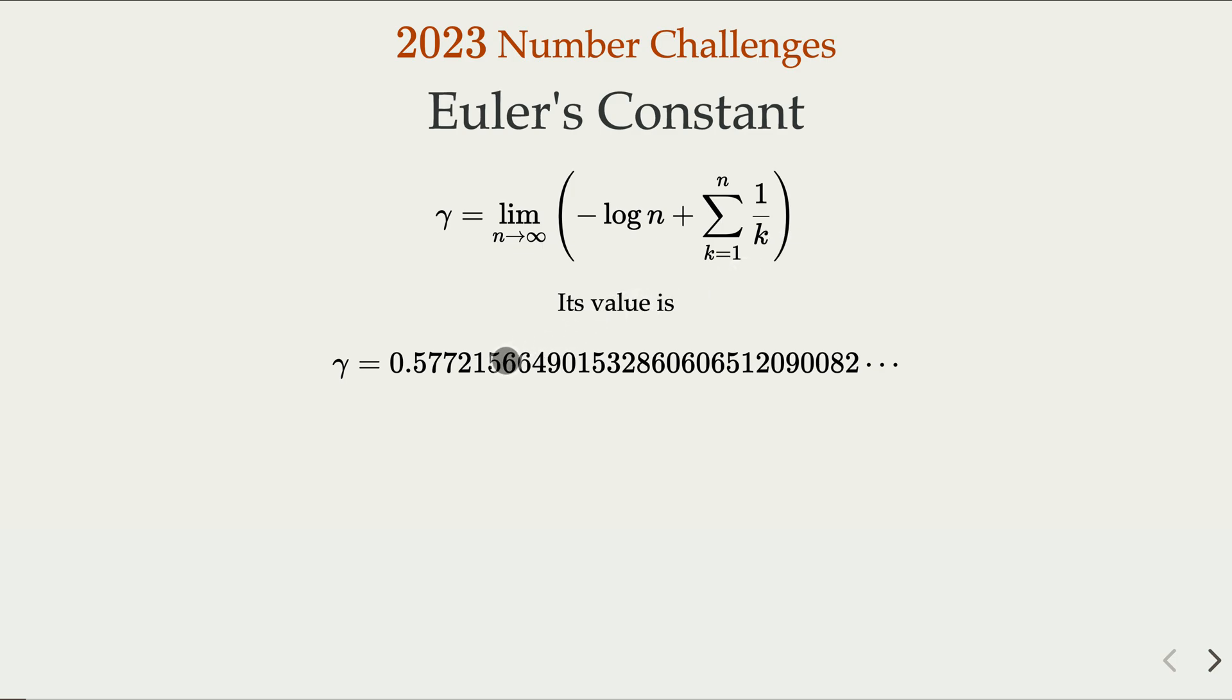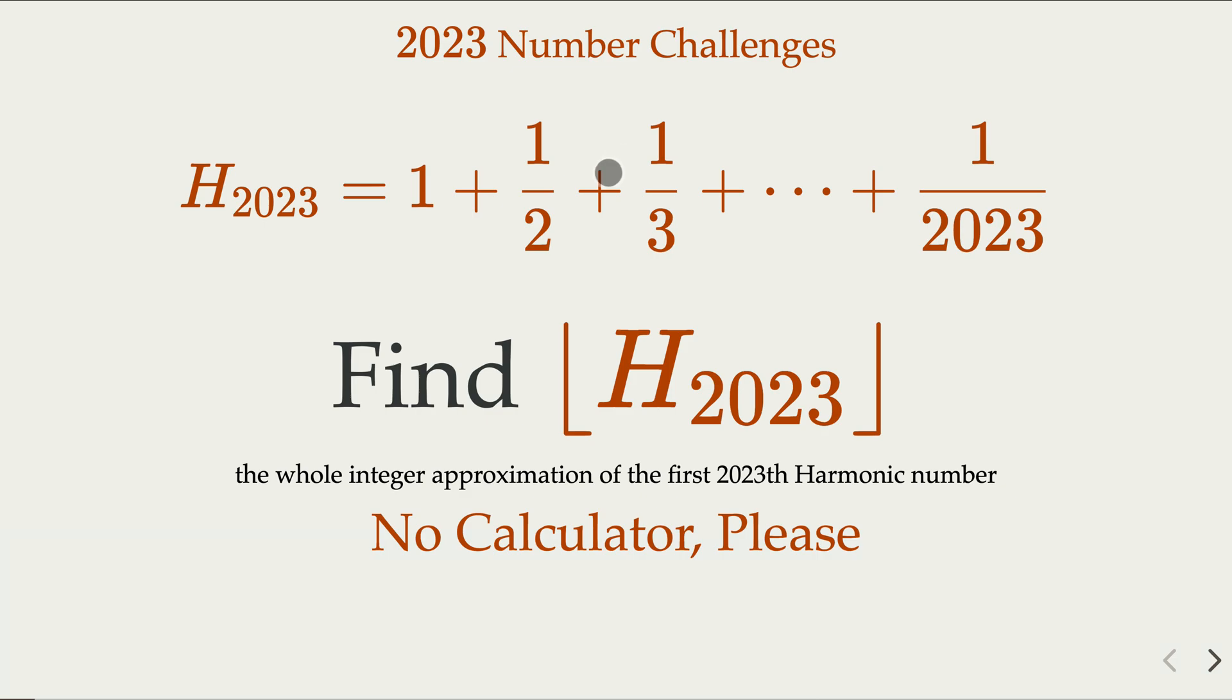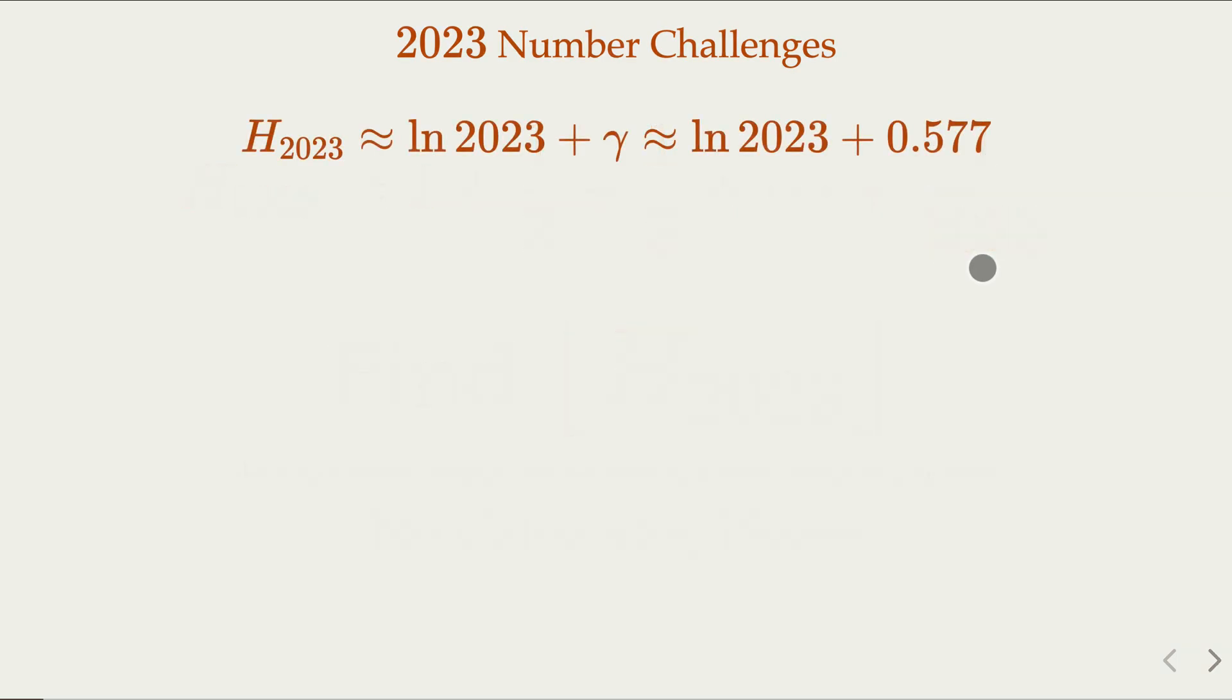The value here is approximately 0.577. This is Euler's constant. So go back to our original problem here. We try to evaluate H2023. We're going to rely on the fact that it is close to log of 2023. That is approximately log 2023 plus gamma here, which is 0.577.